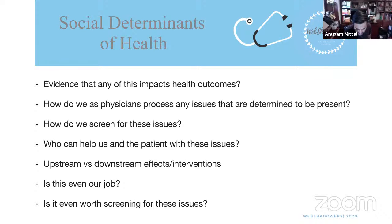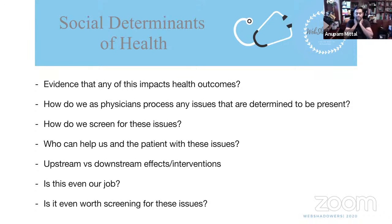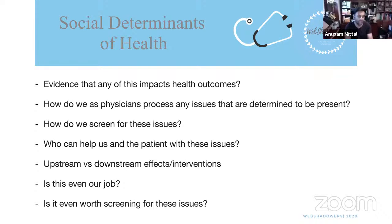Regarding COVID and racial disparities: we know definitively that African Americans, Hispanics, and Native Americans have, overall and across the country, poorer chronic health management than the average white American. When someone contracts COVID with uncontrolled diabetes, hypertension, or heart disease, they're at higher risk. That's the general understanding of why those populations have been disproportionately affected by COVID.